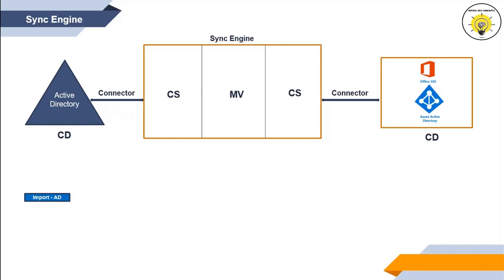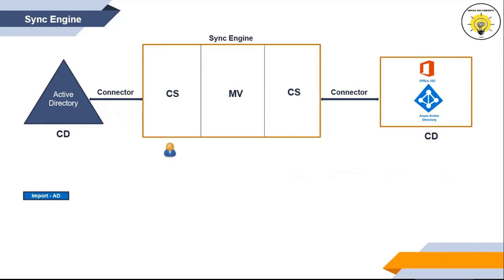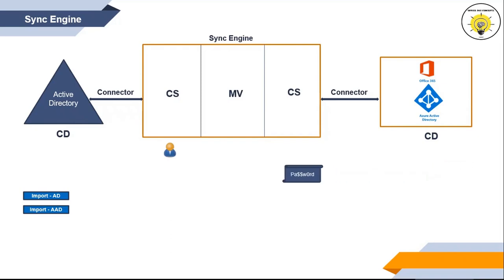For example, if you have created a new user account in Active Directory, during the Import Active Directory cycle, that user object will be updated within connector space. The next Sync Cycle is Import Azure Active Directory. During this cycle, any changes made in Azure Active Directory are updated within the connector space connected with Azure Active Directory. For example, if you have reset a password for a user and enabled password writeback, then passwords will be synced from Azure Active Directory to on-premise Active Directory.